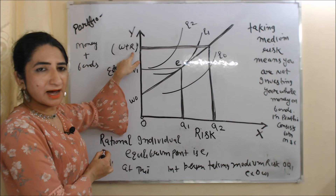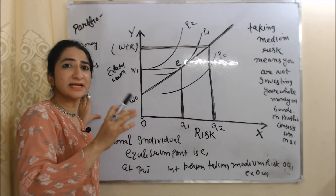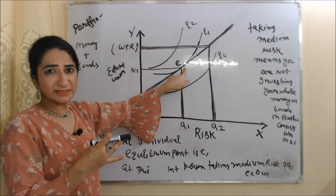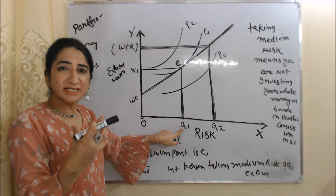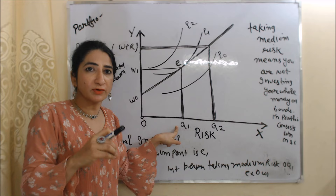But according to Tobin, a rational individual does not take maximum risk — they do not invest their whole money in bonds. The rational individual's equilibrium point is E, where the budget line touches the indifference curve. At this equilibrium point, the risk is O-A, which is medium risk, and expected wealth is O-WL. Taking medium risk means you are not investing your whole money in bonds — your portfolio consists of both money as well as bonds.